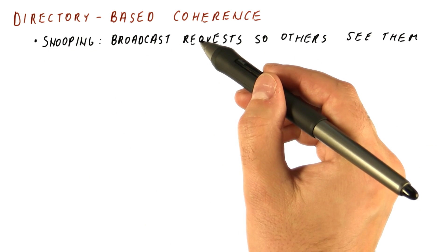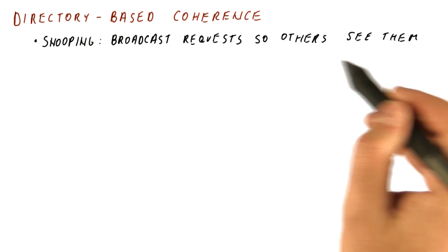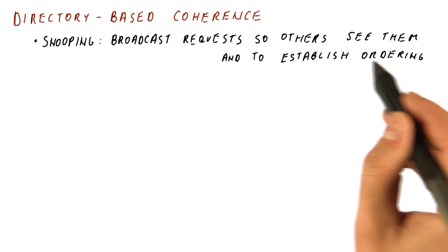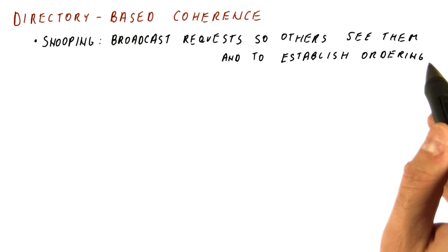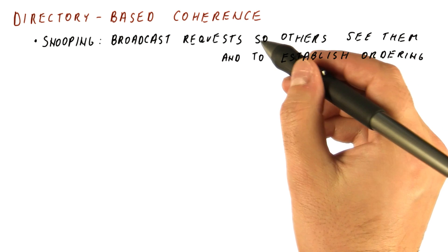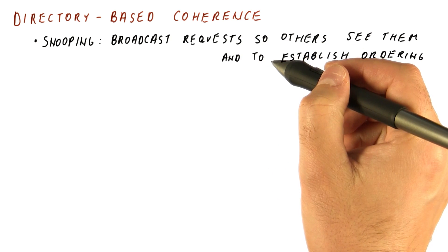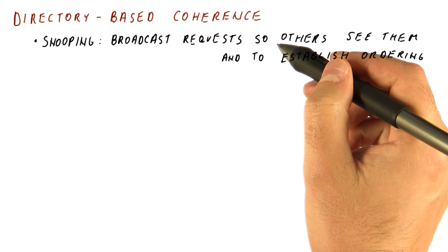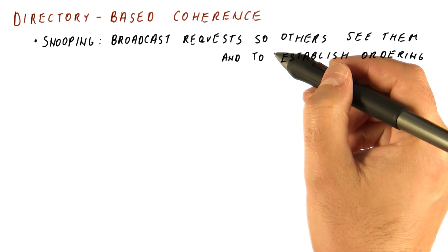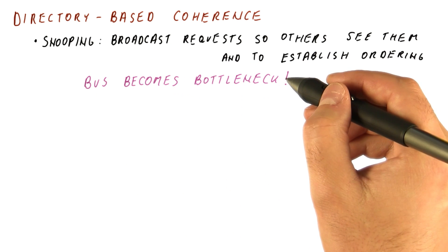In snooping, we had to broadcast all of the requests we make so that others can see them and also to establish ordering. For example, for writes, we need to establish the ordering so that we can obey the third coherence property. That means there needs to be a single bus on which all of the requests from all of the cores go — both cache misses and coherence requests such as invalidations. So the bus used for broadcast becomes a bottleneck.